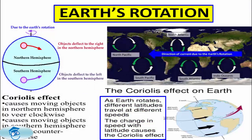Since the speed of rotation of the Earth is maximum at the equator, all moving bodies — be it winds or ocean currents — move in a clockwise direction in the Northern Hemisphere and in the anti-clockwise direction in the Southern Hemisphere. For example, the Canary Current and the Gulf Stream in the Northern Hemisphere, and the Peruvian Current and the West Wind Drift in the Southern Hemisphere.